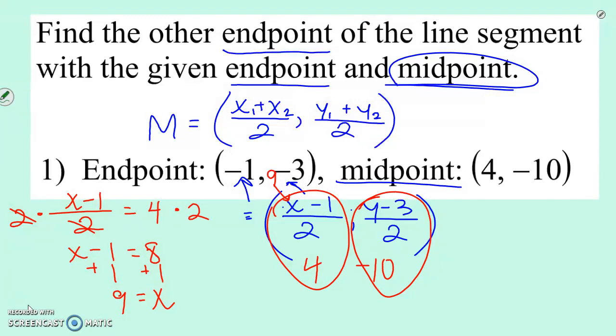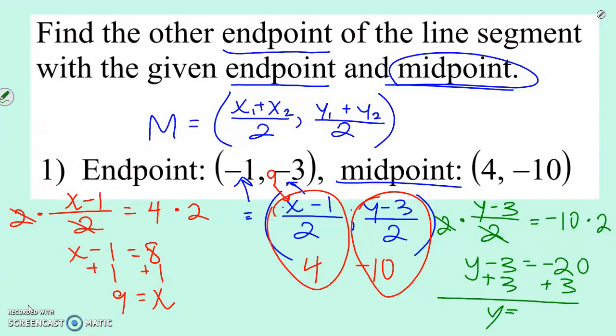Now let's try our y value. y minus 3 over 2 is equal to negative 10. Multiply both sides by 2 so that those cancel. y minus 3 is equal to negative 20. We're going to add 3. Add 3. And y is equal to negative 17. Again, let's plug it in. Negative 17 minus 3 would be negative 20. Divided by 2 is negative 10.